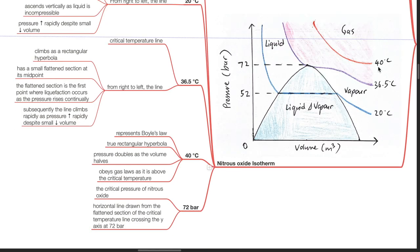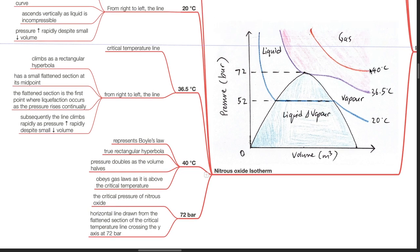The next curve represents 40 degrees Celsius. It represents Boyle's law, a true rectangular hyperbola. Pressure doubles as the volume halves. It obeys gas laws as it is above the critical temperature.